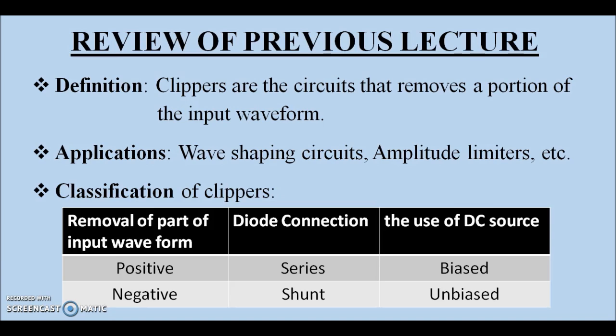Now, clippers can be classified in three different ways. First, which peak of the input waveform it clips off makes the division as positive clipper or negative clipper. Second, how the diode is connected in the circuit, is it connected in series or parallel to the given input, makes the division as series or shunt clipper. Third, is there any DC source present to bias the diode? If there is, it makes the circuit as bias clipper. If not, it makes it as unbiased clipper.